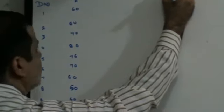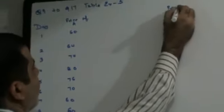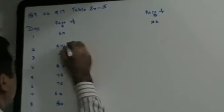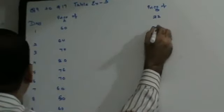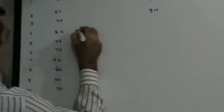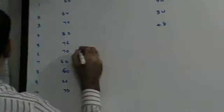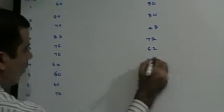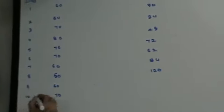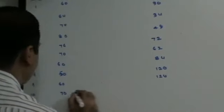And then they're giving you the price of B. Price of B is given to you as 22, 30, 34, 48, 72, 62, 84, 120, 124, and 124.